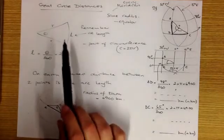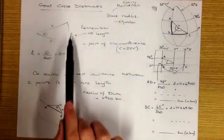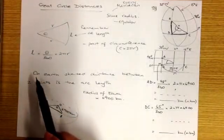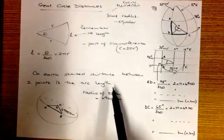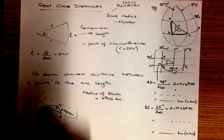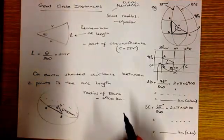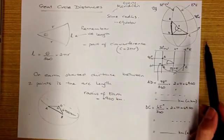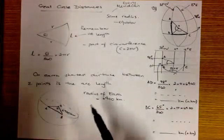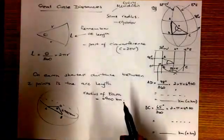If we're looking to find the great circle distance, the shortest distance between two points on Earth is the arc length. So here's my Earth, and here are my two points A and B that lie on either a meridian of longitude or on the equator, the only parallel of latitude that is a great circle.